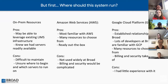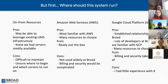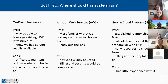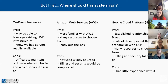Before writing any code, I had to figure out where this system was actually going to run. I considered three options. First, on-premises resources — servers that the Broad Institute owns and maintains. The pros were that I could leverage existing LIMS — Laboratory Information Management System — infrastructure, and I knew servers were readily available. The cons were that it's difficult to maintain and I wasn't sure who to ask or what servers to run things on.